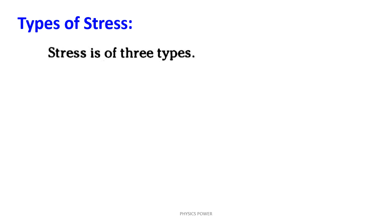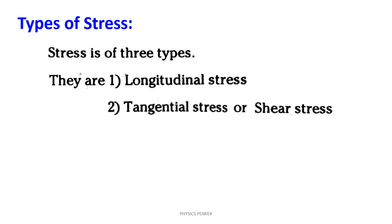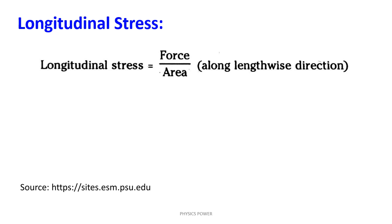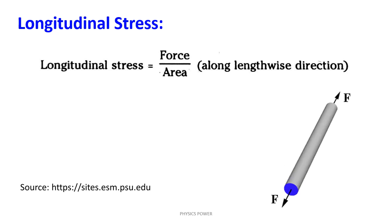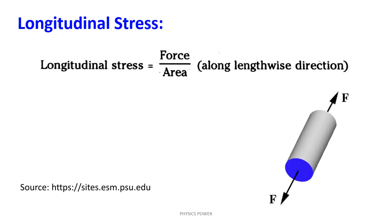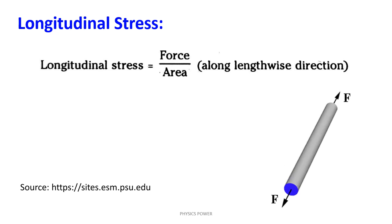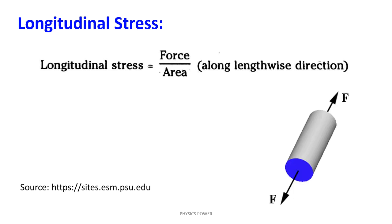Types of stress — there are three types. First, longitudinal stress. Second, tangential stress, also called shearing stress. Third, volumetric stress. Longitudinal stress is force per unit area viewed from the length point of view — force applied along a particular wire. Along the wire length, force is applied causing elongation. We observe the force in the cross-sectional area along the length — this is longitudinal stress.